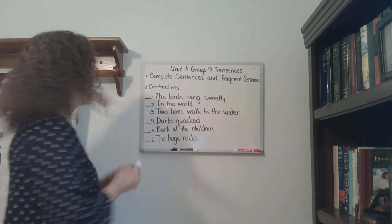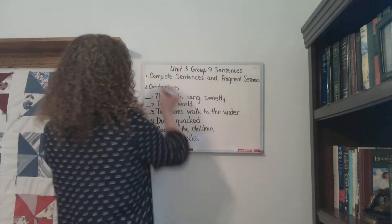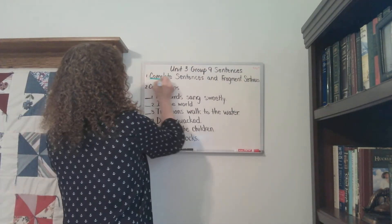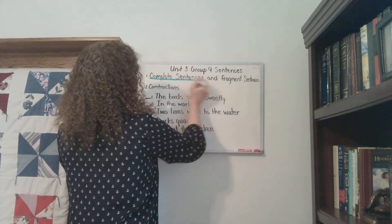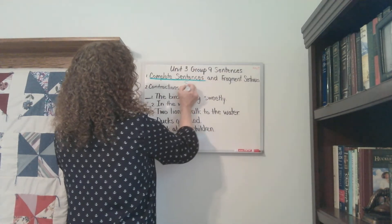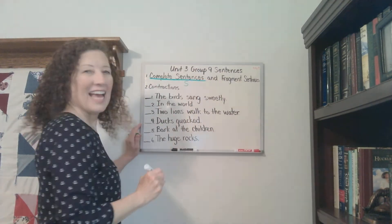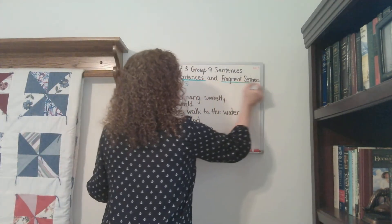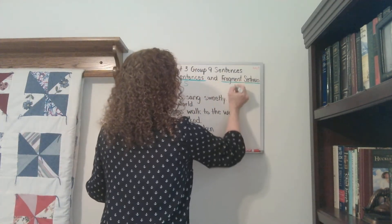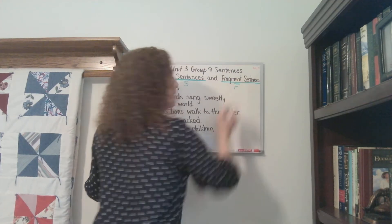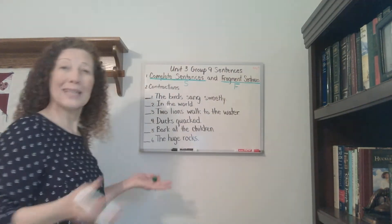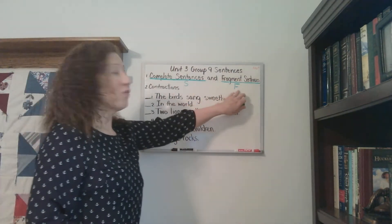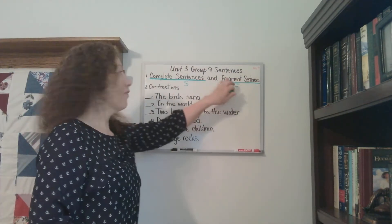We're going to say that our complete sentence will be marked with an S, and our fragment sentence — which is just part of a sentence but not a complete thought — that's going to be marked with an F for fragment.